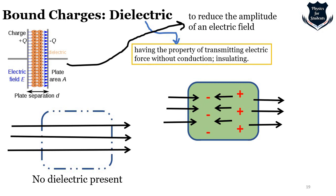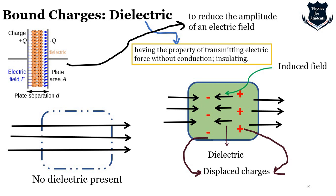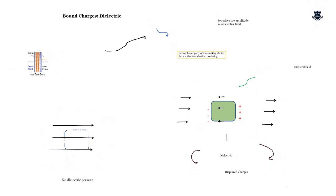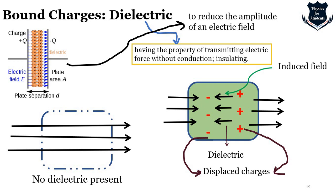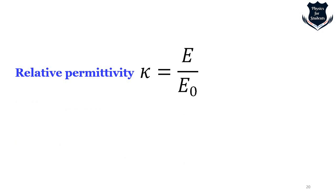When placed in an electric field, the dielectric becomes polarized — meaning positive and negative charges are displaced from their original positions. Positive charges are displaced in the direction parallel to the applied electric field, and negative charges are displaced in the anti-parallel direction. These displaced charges give rise to their own electric field that opposes the applied field, making the net field within the dielectric less than the external field. These are called bound charges.